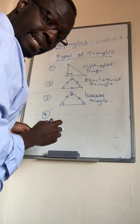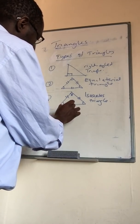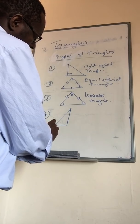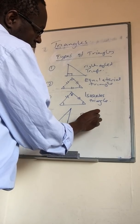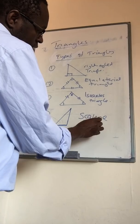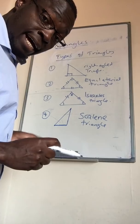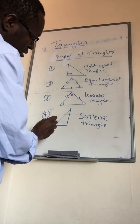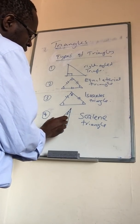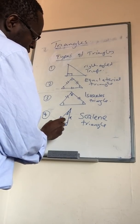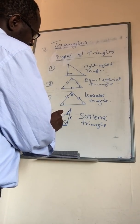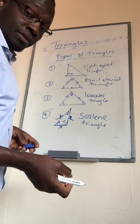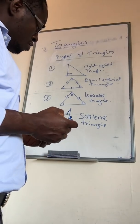Number four, we have what is called a scalene triangle. This is a triangle with no matching sides and no matching angles — both the sides and the angles do not match; they are completely different. For example, angle A is different from angle B and different from angle C, and the sides X, Y, Z are all completely different. This brings us to the end of the types of triangles.